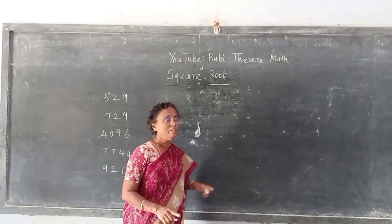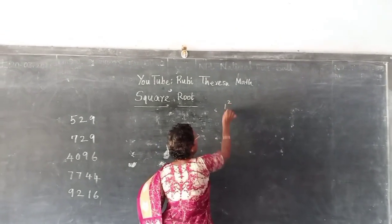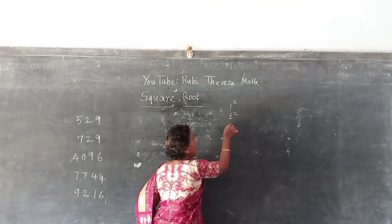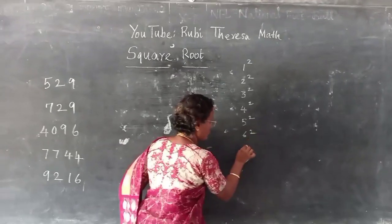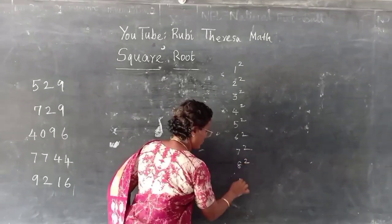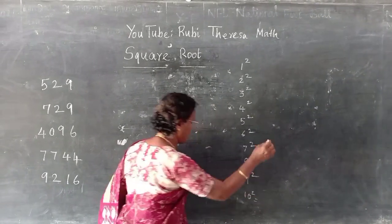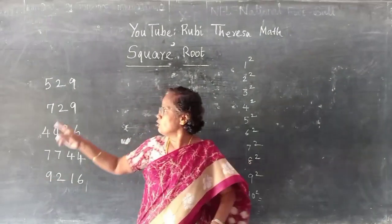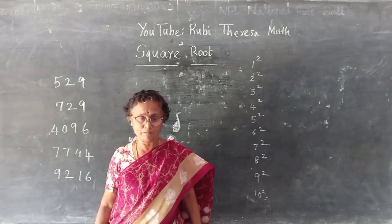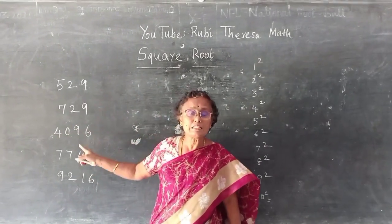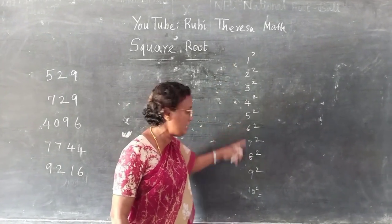Listen to me carefully. Before doing this, you have to write 1 square, 2 square, 3 square, 4 square, 5 square, 6 square, 7 square, 8 square, 9 square. If possible, 10 square also you can write, but it is not necessary here. Up to 9 square, because you are going to find out the square root for 3-digit and 4-digit numbers.